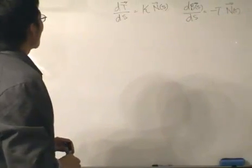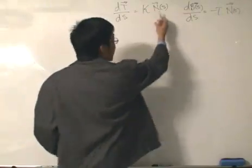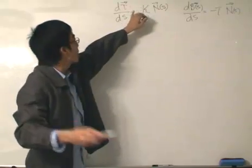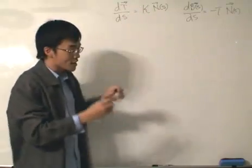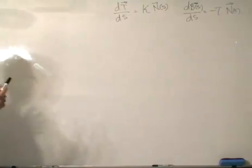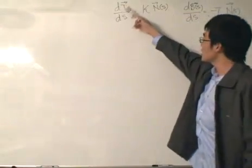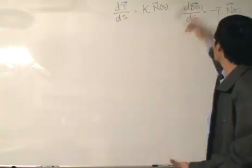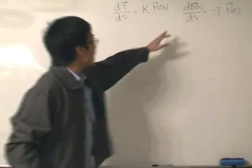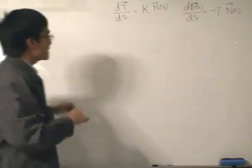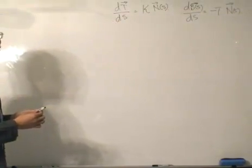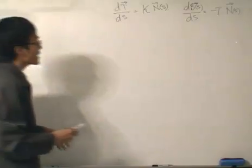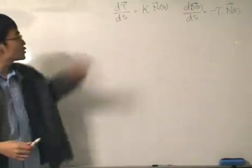Let me just check again — yes, that is correct. This one I get by rearranging. I know that we normally express the unit normal vector as rho, or 1 over kappa, multiplied by this, but I just rearrange it. Since we can differentiate the unit tangent vector in terms of S, and then differentiate the unit binormal vector in terms of S, it seems logical to also find the first derivative of the unit normal vector.